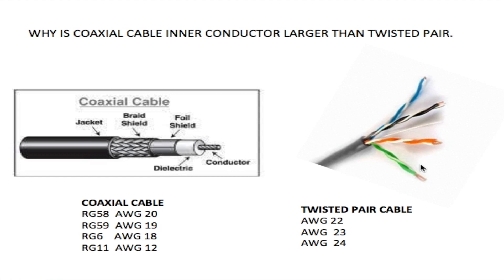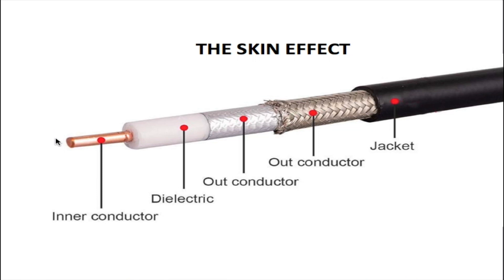My next question was: why? I know that coaxial cables are much faster because they have shielding that keeps out noise and electromagnetic fields that would disrupt data on the inner conductor. But why does that inner conductor have to be thicker than a twisted pair wire? That's what puzzled me. After some more digging, I found the answer: the reason this inner conductor is larger than any twisted pair conductor is because of a term called the skin effect.